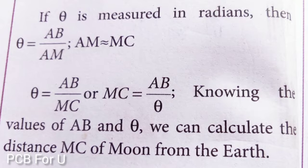So knowing the values of AB and theta, we can calculate MC. MC is nothing but the distance of the Moon from the Earth.